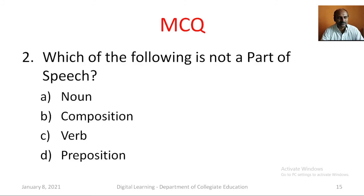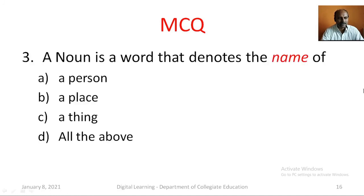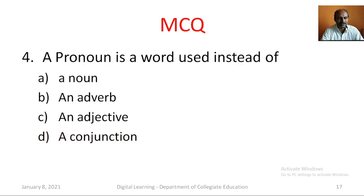Question number 2: Which of the following is not a part of speech? Option A: noun. Option B: composition. Option C: verb. Option D: preposition. The correct answer is composition. Question number 3: A noun is a word that denotes the name of — option A: a person, option B: a place, option C: a thing, option D: all the above.